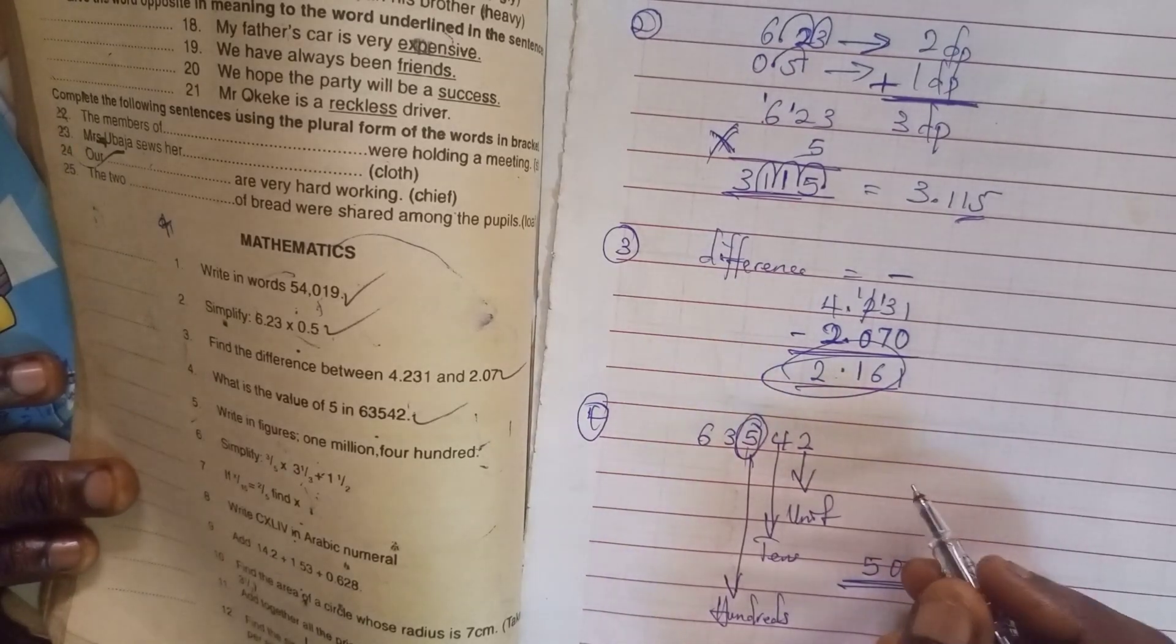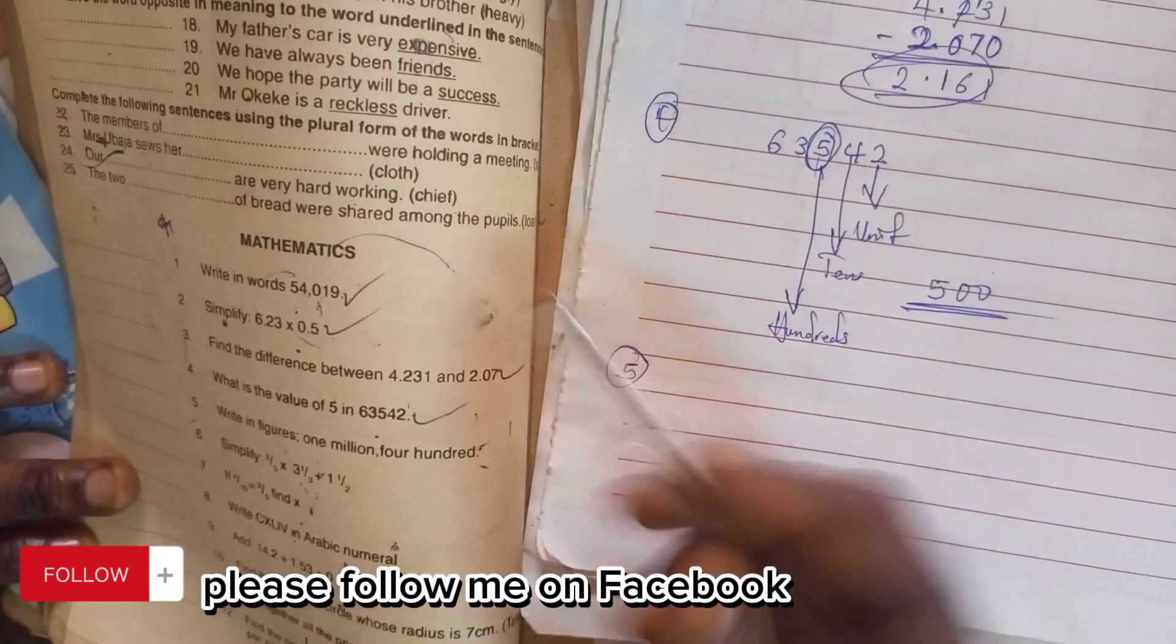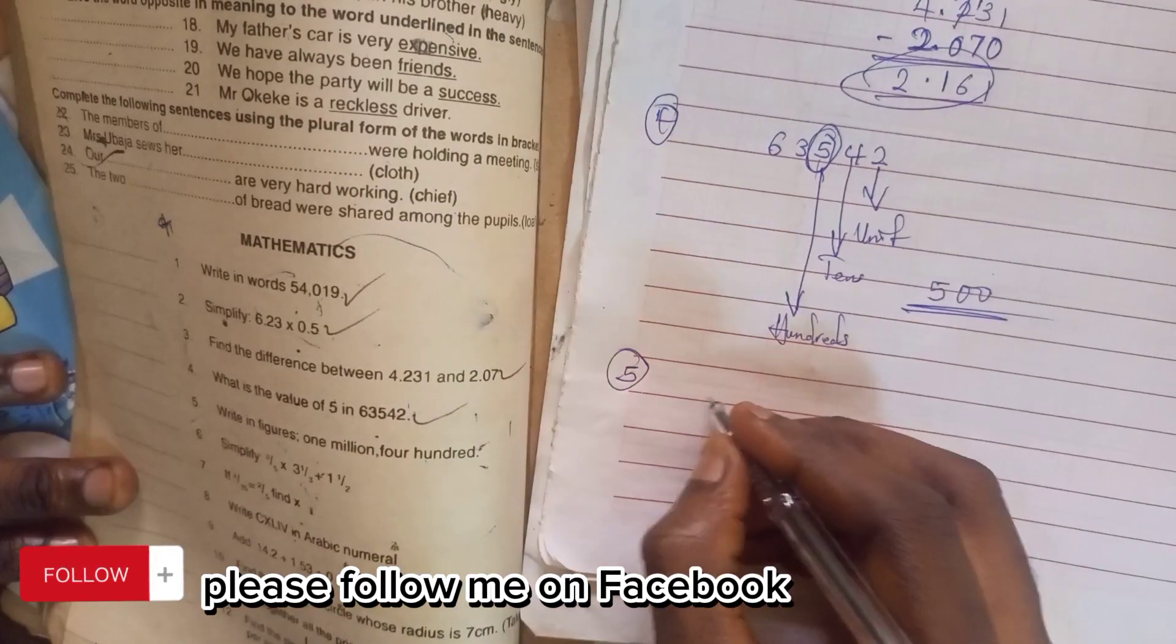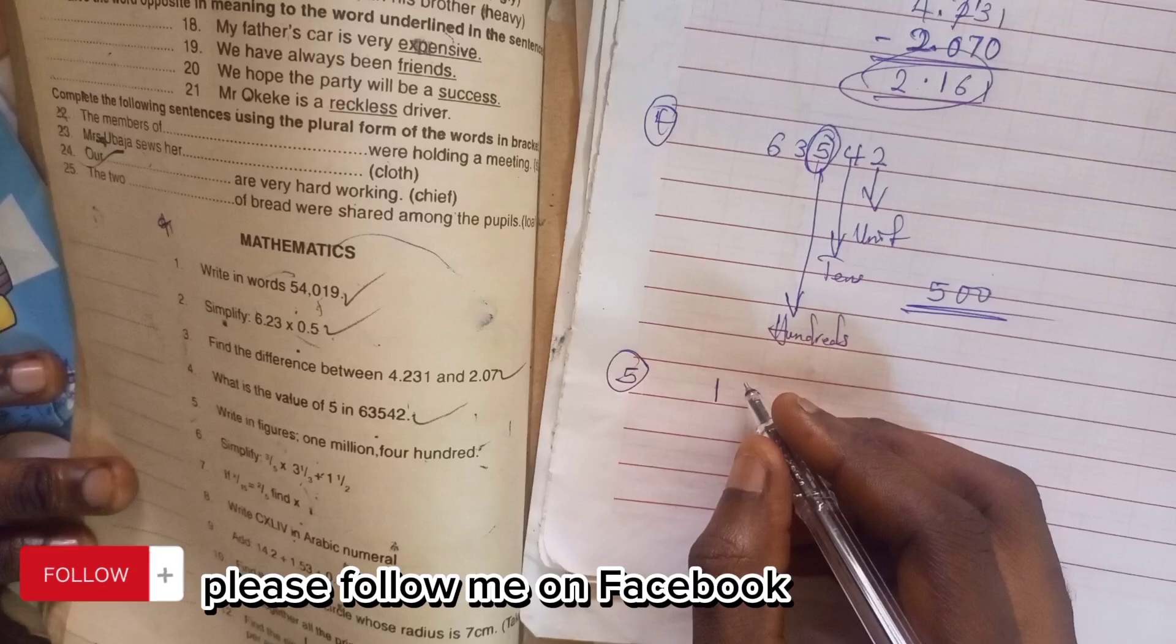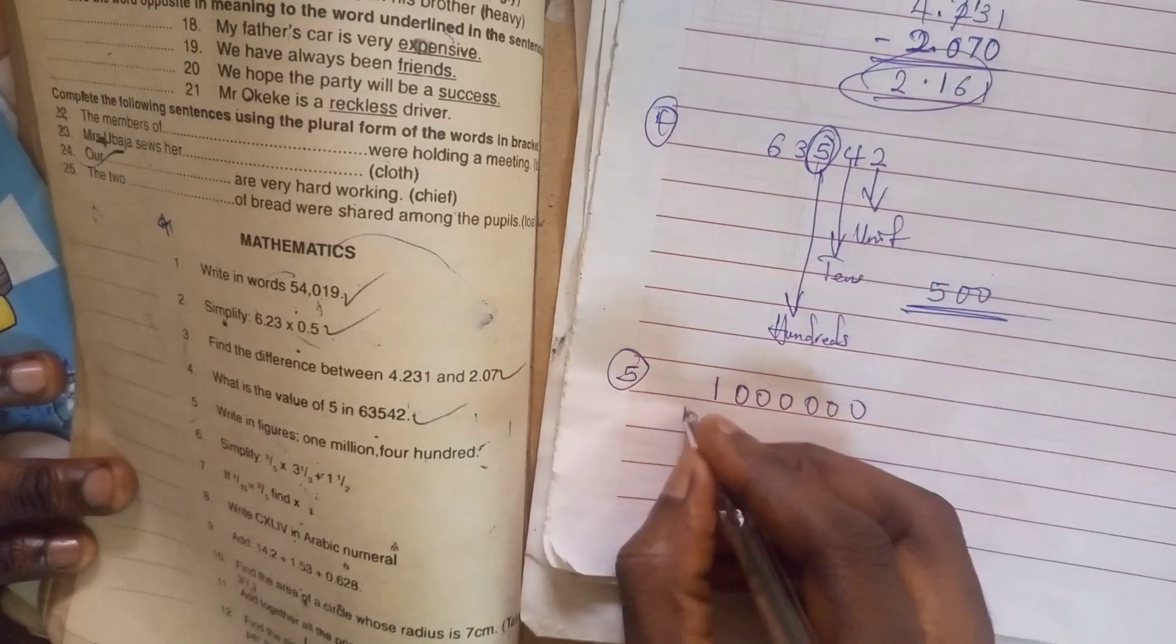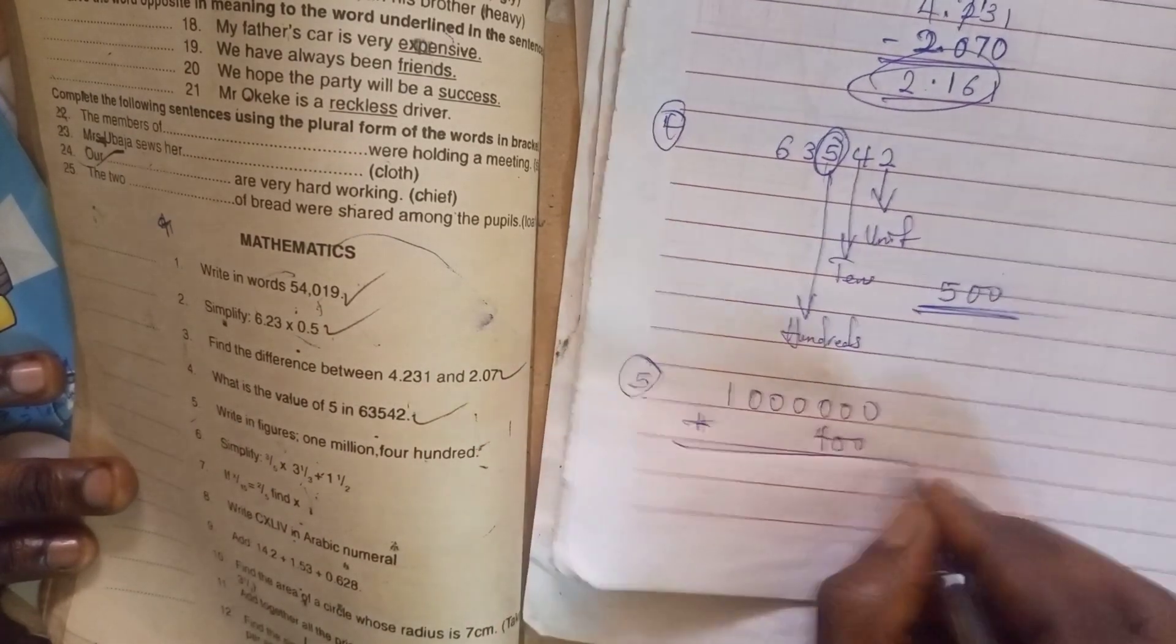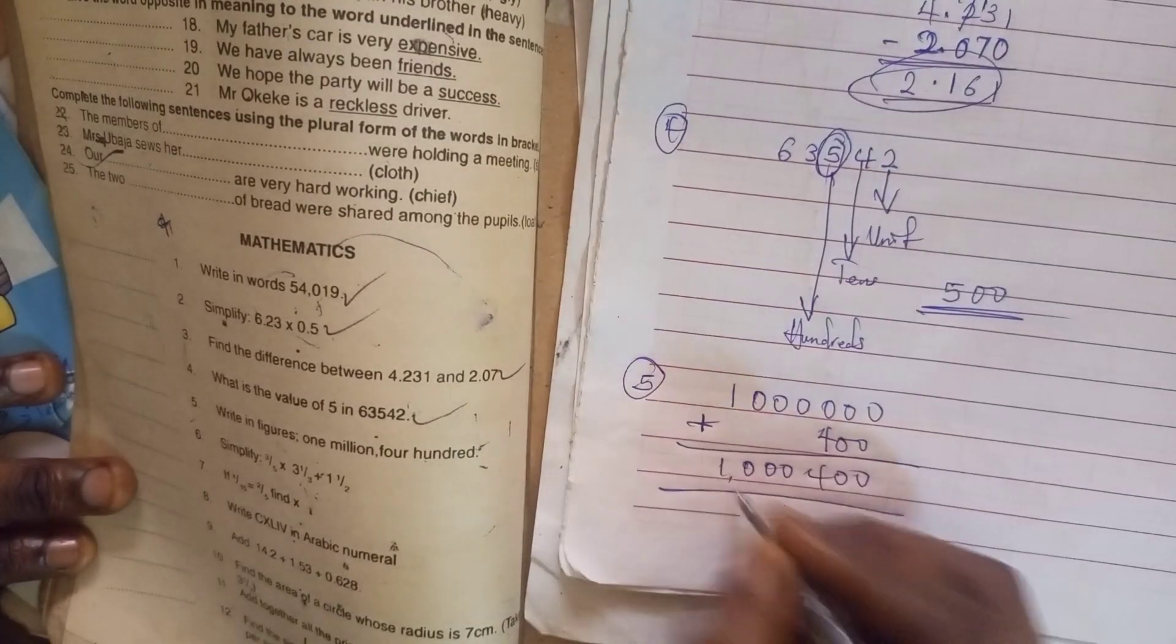Then the next one, which is the fifth part of the question, write in figures 1,400,000. So you write your 1,000,000. As you know, 1,000,000 has 6 zeros. So you write your 6 zeros. You add it to it 400. So it should be 1,000,400. So this is the answer.